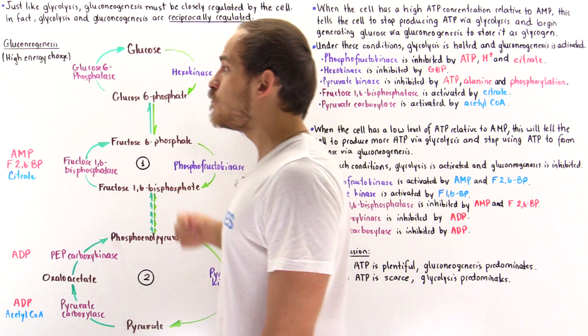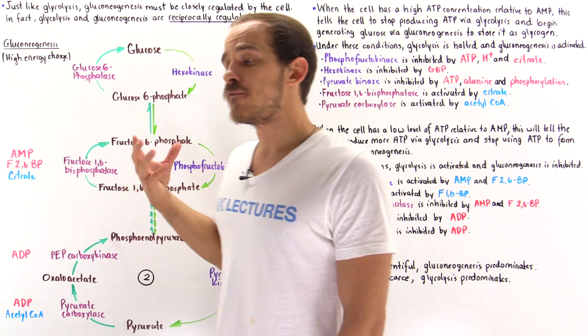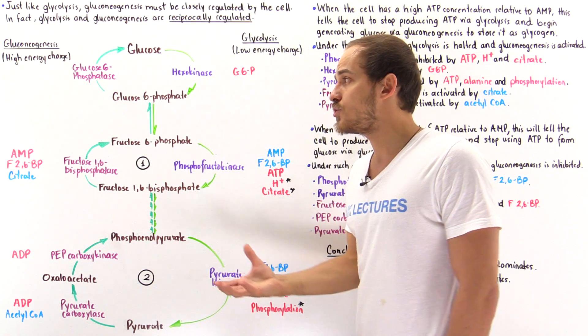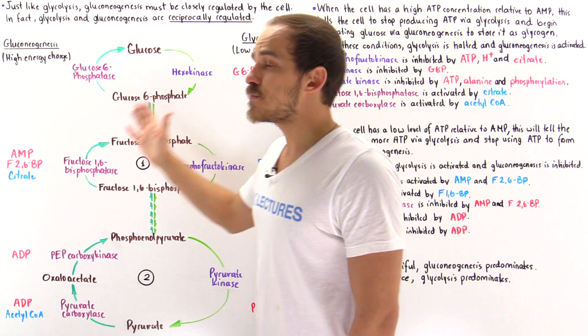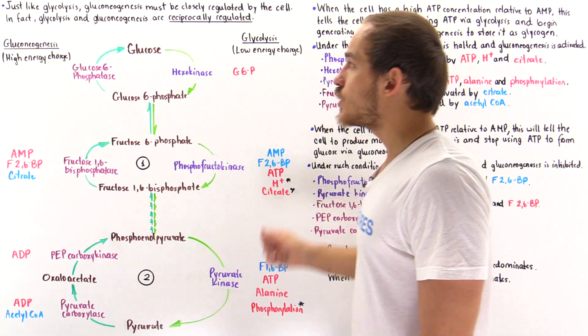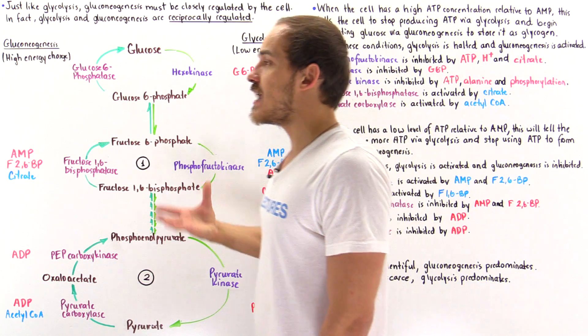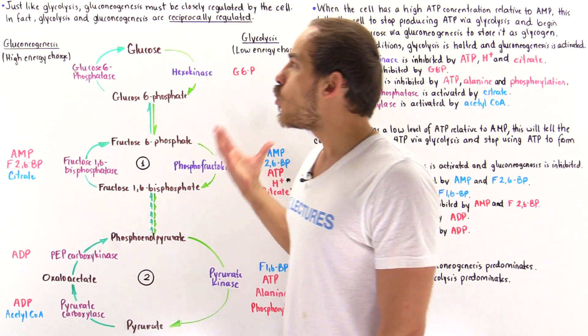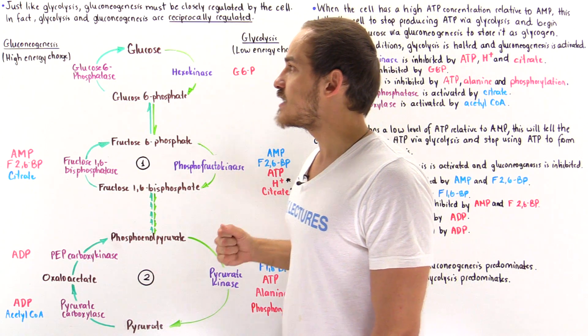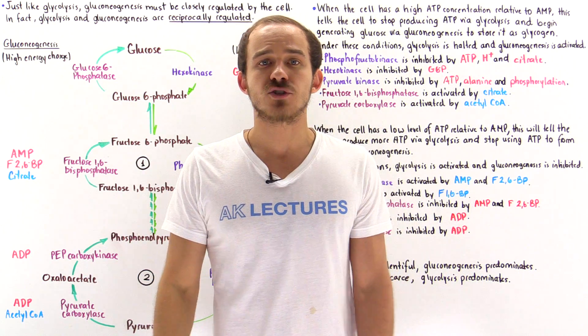But we know in gluconeogenesis and glycolysis, these two processes both release Gibbs free energy. And that means neither of these processes are actually at equilibrium, and so we cannot use Le Chatelier's principle to explain why this process takes place and the other one doesn't.